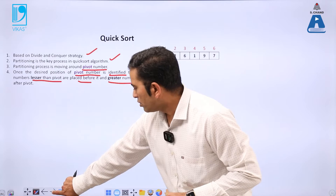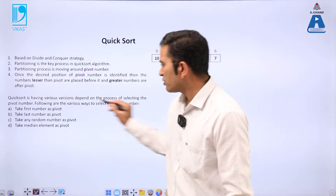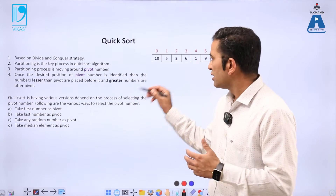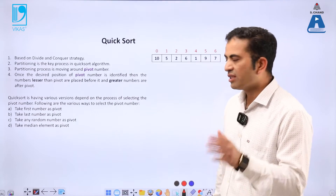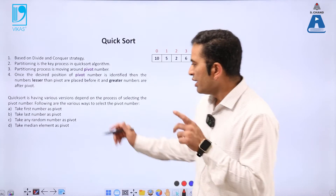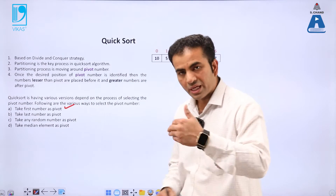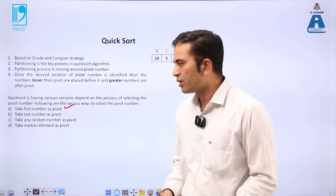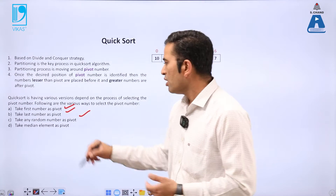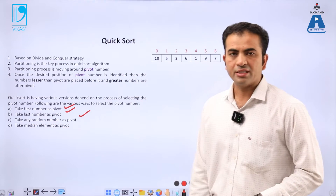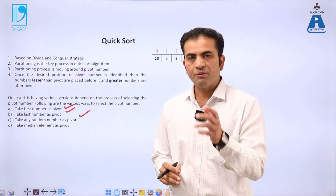Quick sort has various versions because of the random selection of the pivot number. If we take the first number as a pivot, the last number, any random number, or the median element as a pivot number — the algorithm changes accordingly. We need to divide the whole array based on the pivot number.